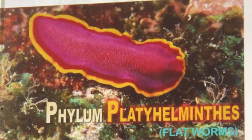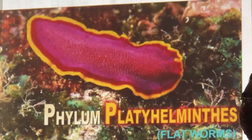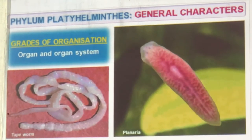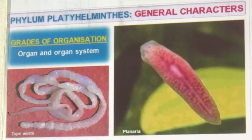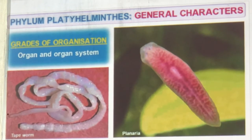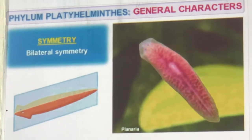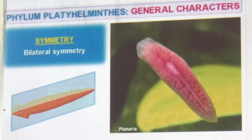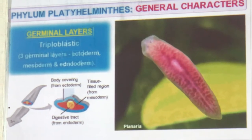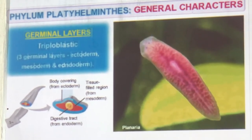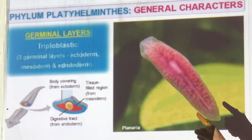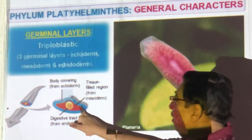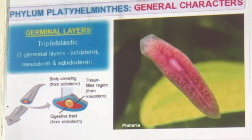Now we come to Platyhelminthes — flatworms. They show organ and organ system level — development is progressing. Examples are tapeworm and Planaria, the common flatworm. They are bilaterally symmetrical — I can cut it into two equal halves, left and right. Three germ layers are present: ectoderm, mesoderm, and endoderm. The tissue fills with mesoderm tissue so there is no cavity — no coelom — still developing but at a higher level.